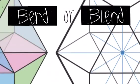Basically, you've got two choices. You can bend light or you can blend in with the light.